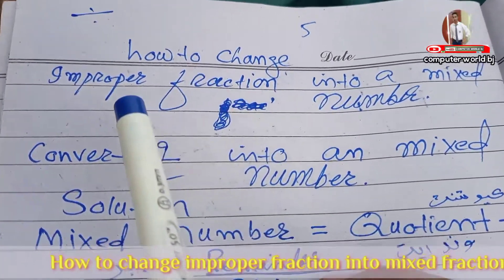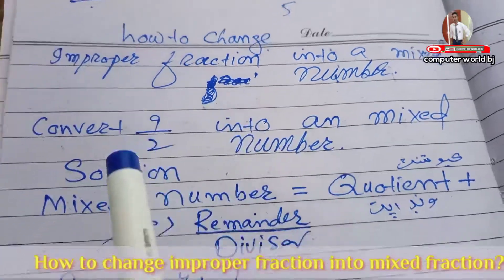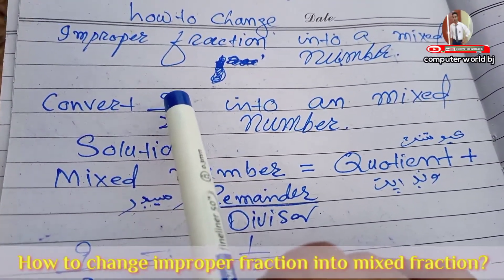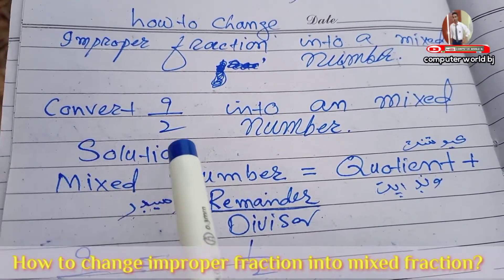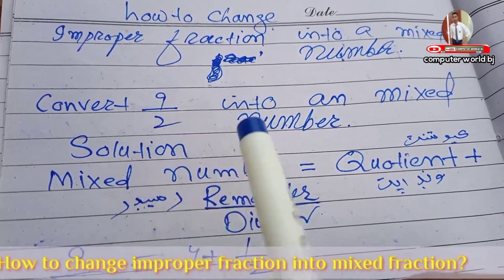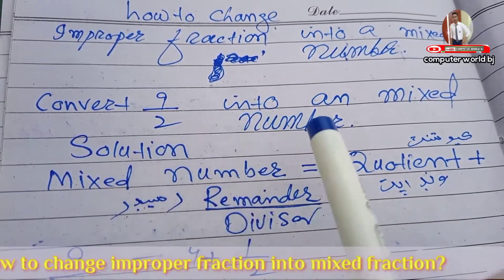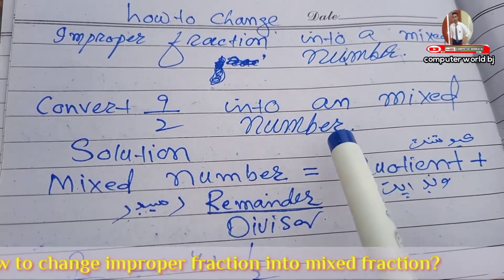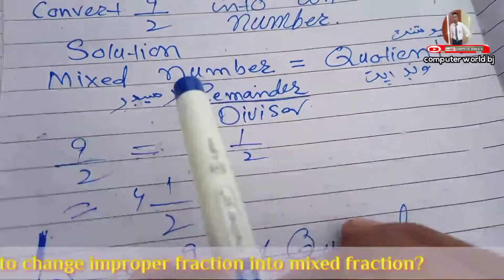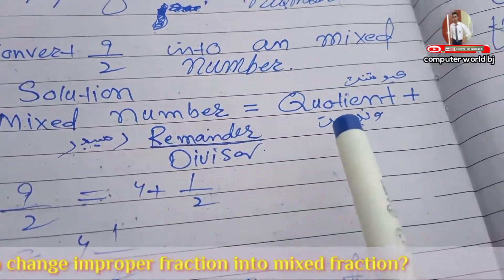How to change an improper fraction into a mixed number. Convert 19 upon 2. The solution is a mixed number — a mixed fraction.